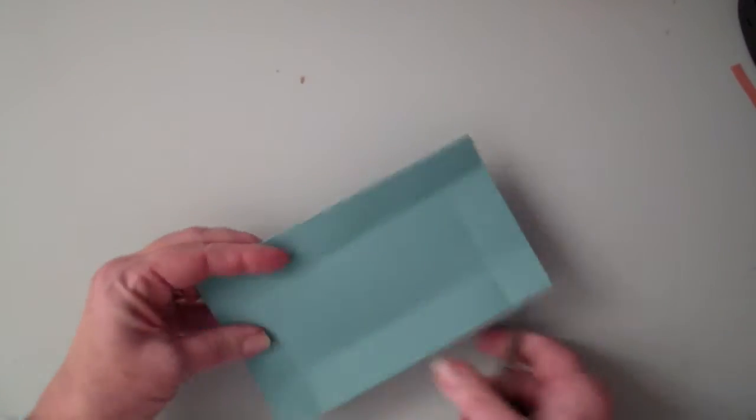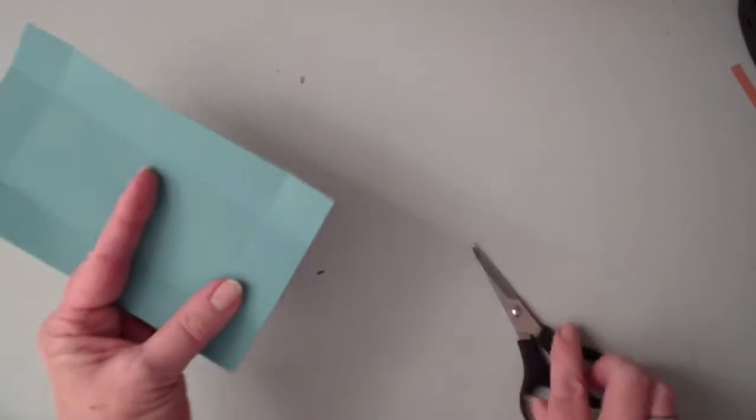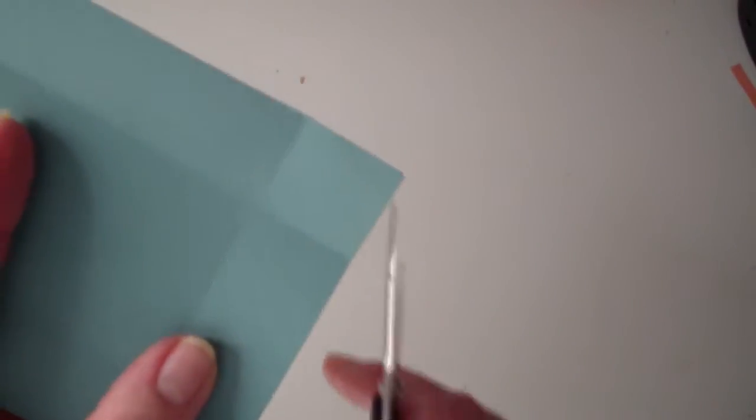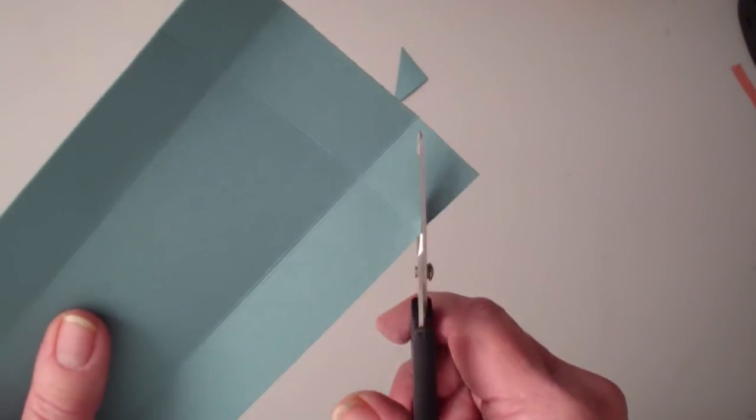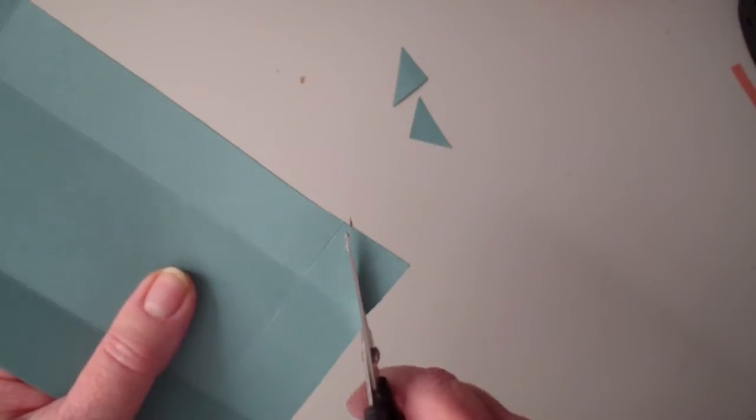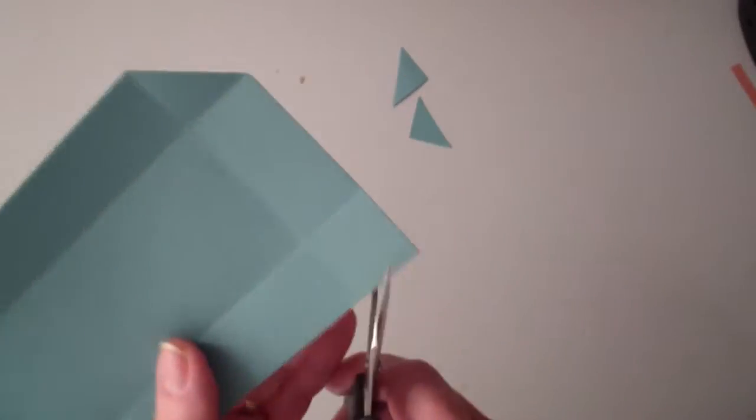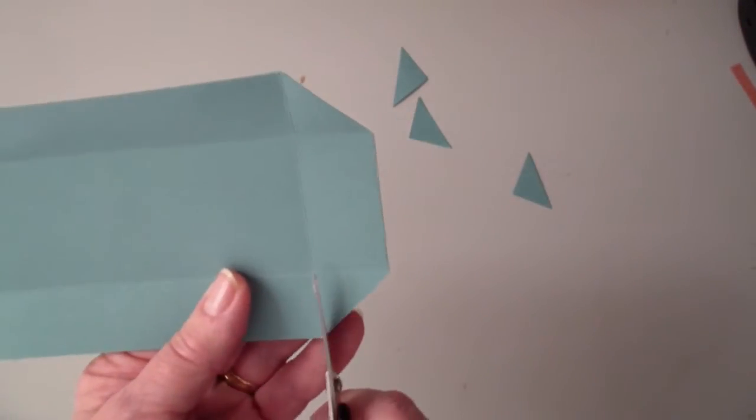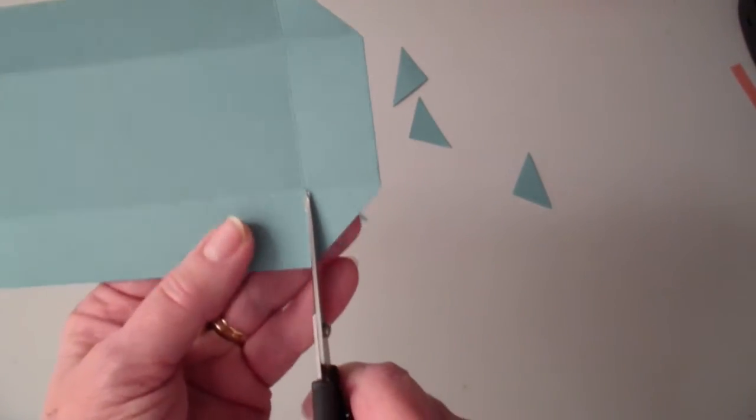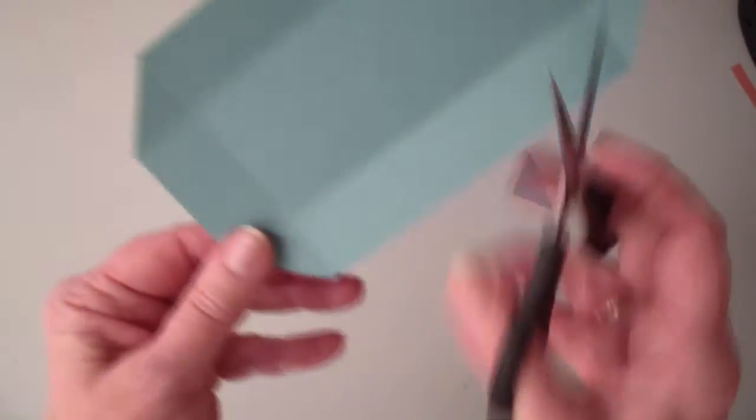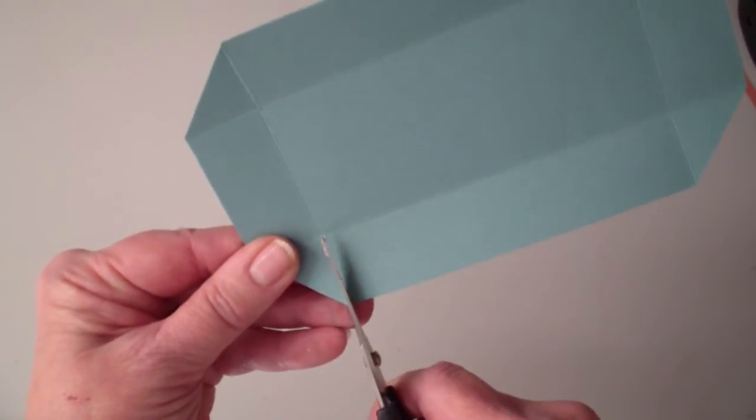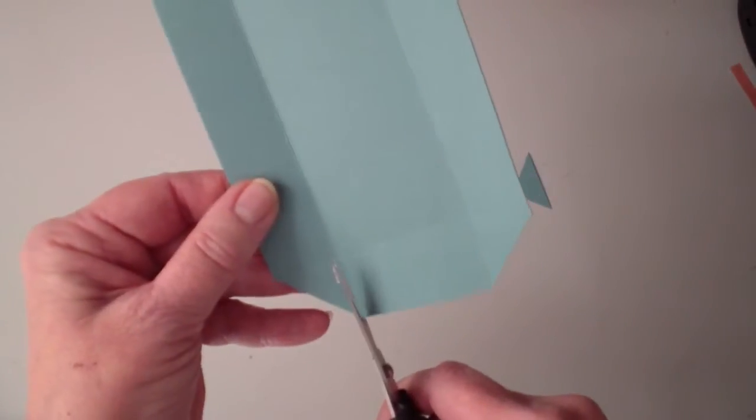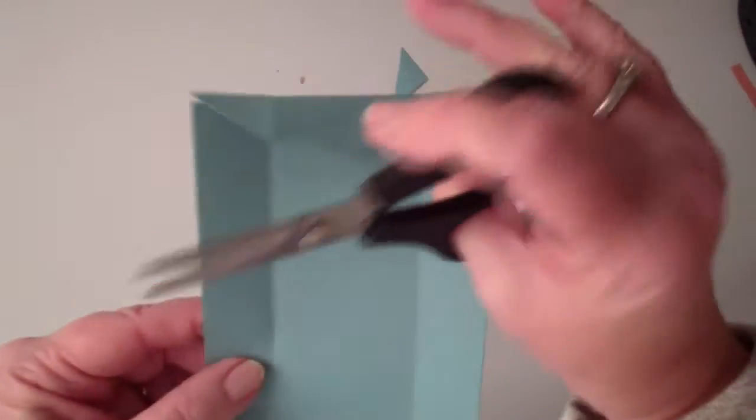And then, I am going to cut at a diagonal those 1 inch squares on the four sides. This just helps when we fold up to make our carrier that we don't have bulkiness going on. And then I am going to cut the sides, all four sides, just to do my flaps.